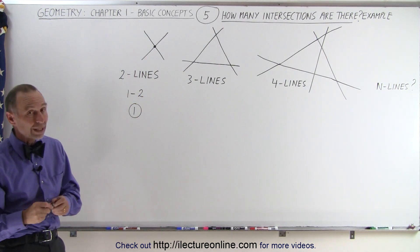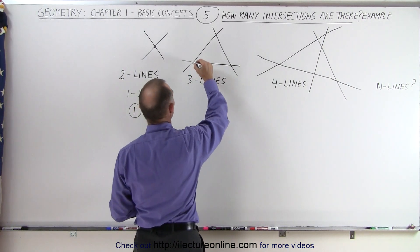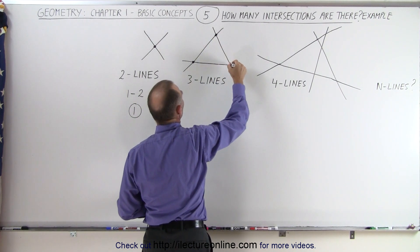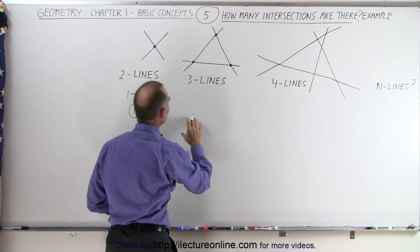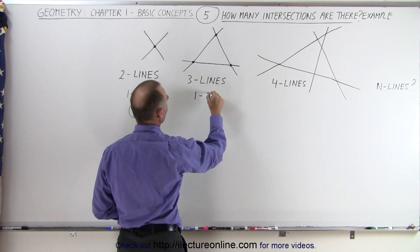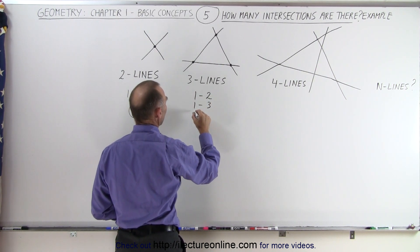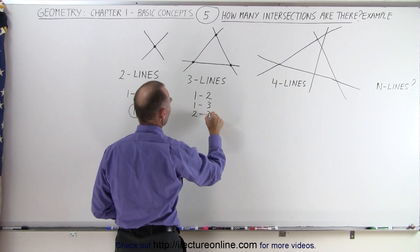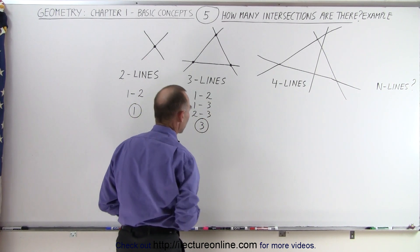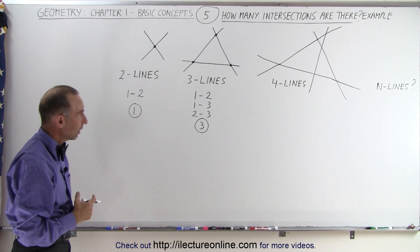Now when we have three lines, you can see we have three intersections — one here, one here, one there. That means that we have line one intersecting with line two, line one intersecting with line three, and line two intersecting with line three, which means three intersections. Hopefully you're beginning to see a pattern there.